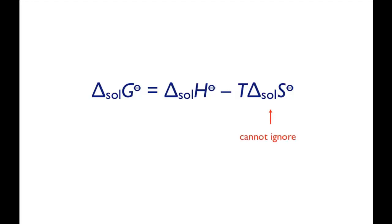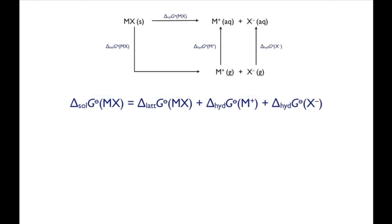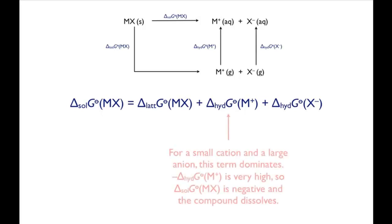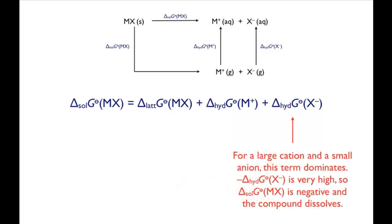As a general rule, compounds with small cations and large anions, or large cations and small anions, are soluble. Compounds with a small cation and a large anion have one very large Gibbs energy change of hydration — that's for the cation — and this dominates the energy cycle. A similar thing happens for a compound with a large cation and a small anion: there's one very large Gibbs energy change of hydration, this time for the anion, and this dominates the energy cycle. A combination of one large ion and one small ion means the lattice energy is high, but it's not high enough to counter the very large Gibbs energy changes of hydration. The compounds are therefore soluble.